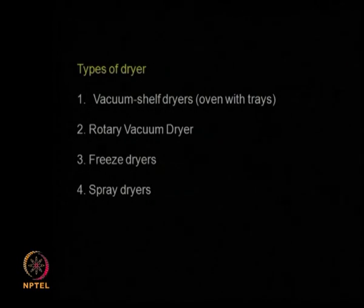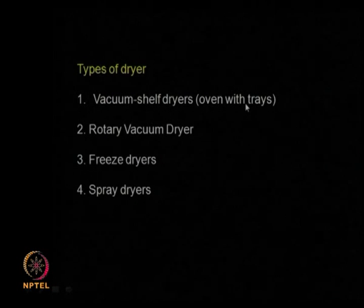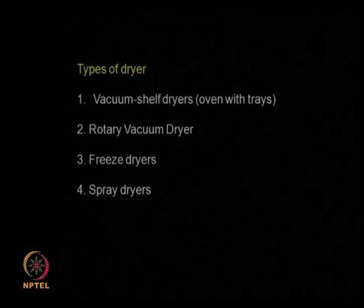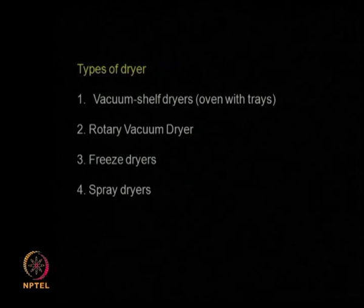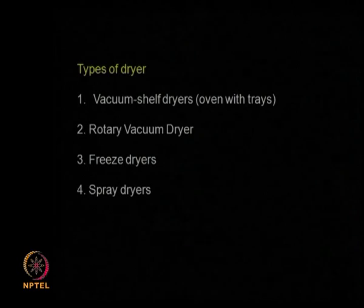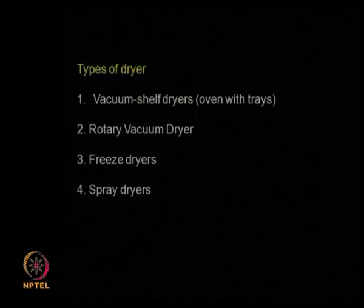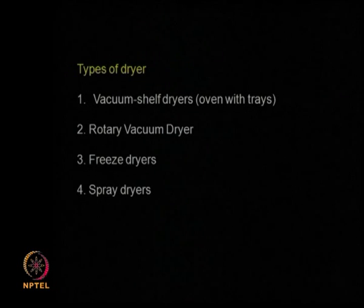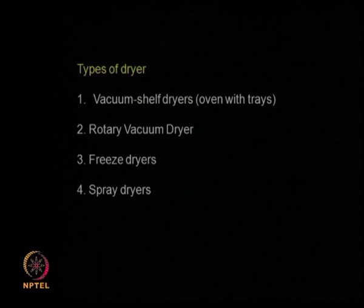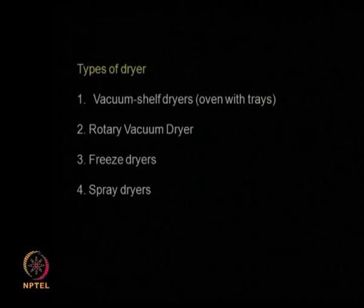There are different types of dryers. We call it the vacuum shelf dryer or oven dryer, also called tray dryer — a batch operation where you pack material in trays and keep it inside. You may apply vacuum or not depending upon the setup, then raise the temperature and maintain it for a long period depending on your protocol. The temperature also depends upon the type of solvent you want to remove and how low the moisture content has to be.